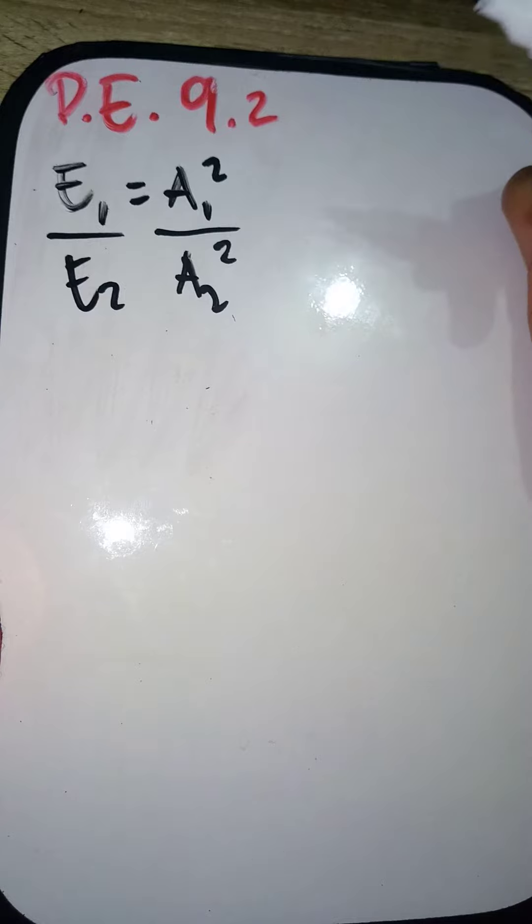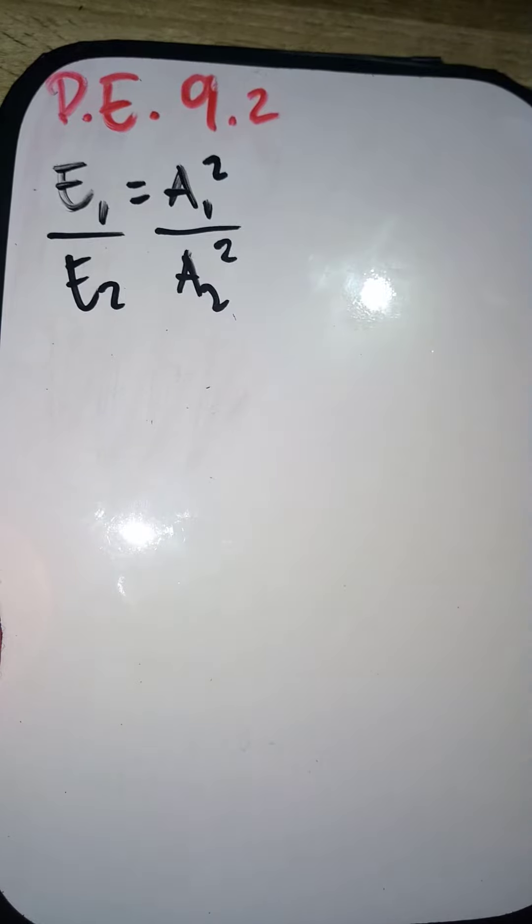So the problem in our practice exercise 9.2, in our Phoenix book, states that the amplitude of one wave is 3 times the amplitude of another. The amplitude of one wave is 3 times greater compared to the other.